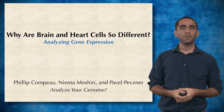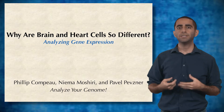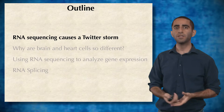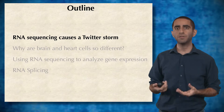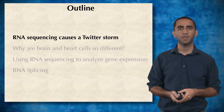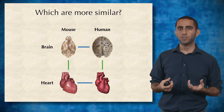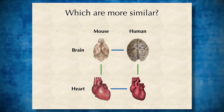In this practical challenge, we're going to be looking at what makes two different types of cells look different. Specifically, we're going to be looking at a paper that caused a bit of a Twitter storm. The original question was asking which looks most similar: the same tissue across different organisms — for example, a mouse brain with a human brain and a mouse heart with a human heart — or the same organism but across different tissues.